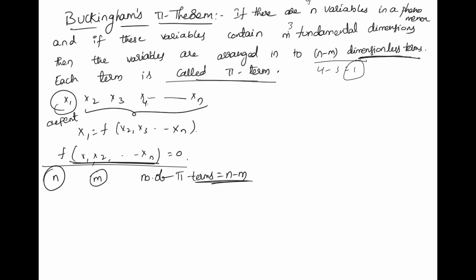The equation then becomes f(π1, π2, ..., π(n-m)) = 0. Each pi term is a dimensionless term and is independent of the system — meaning by multiplication or division, it remains constant and does not change the characteristics of the pi term. Its dimensional formula is M⁰L⁰T⁰. Each pi term contains m plus 1 variables, where m is the number of fundamental quantities.